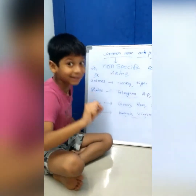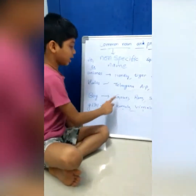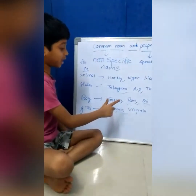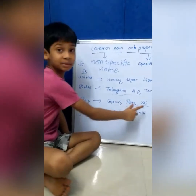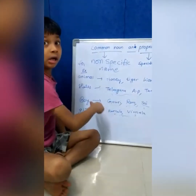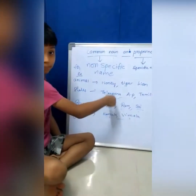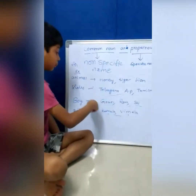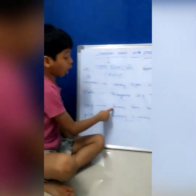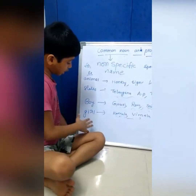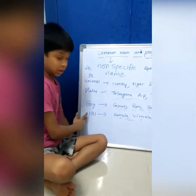They have particular names: Gaurinandan, Ram, Sai. They are proper nouns. Girls.